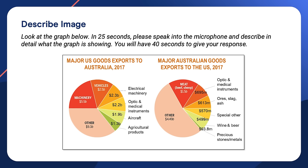OK, let's do another one. Remember not to get lost in detail. Just describe the most obvious parts of what you see and use the E2 method. Again, 25 seconds to prepare and 40 seconds to speak. Ready? Prepare, then speak.